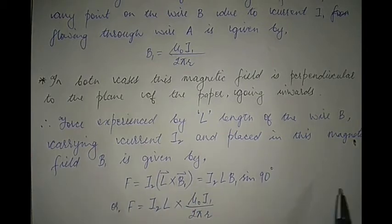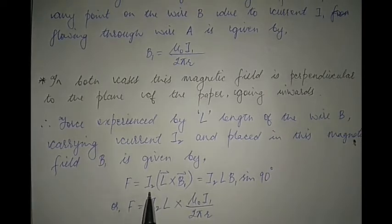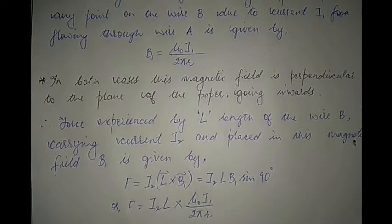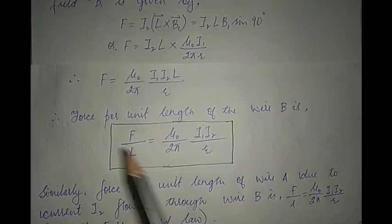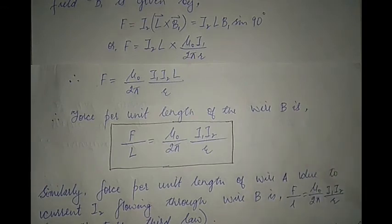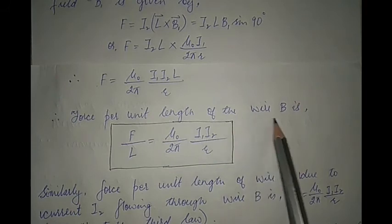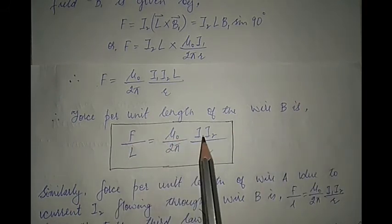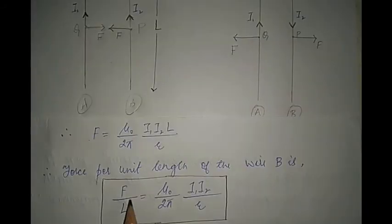The force experienced by length l of wire B carrying current i2, placed in magnetic field B1, is given by F = i2 × l × B1. Since the current and magnetic field are perpendicular to each other, sin 90° = 1, so F = i2 × l × (μ₀i1 / 2πr), which gives F = (μ₀ / 2π) × (i1 × i2 × l / r). Therefore the force per unit length of wire B is F/l = (μ₀ / 2π) × (i1 × i2 / r).